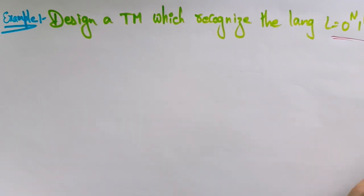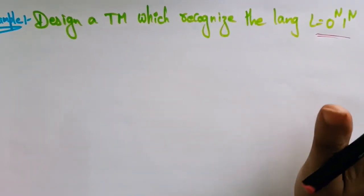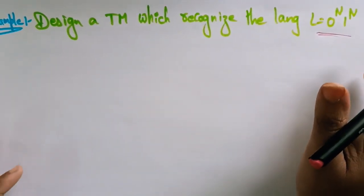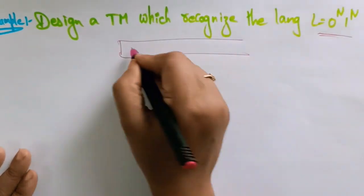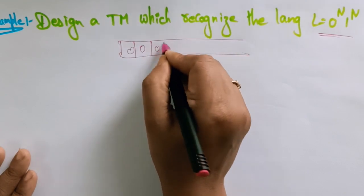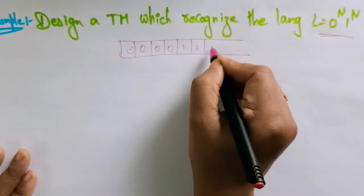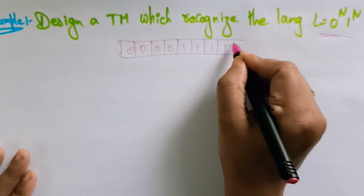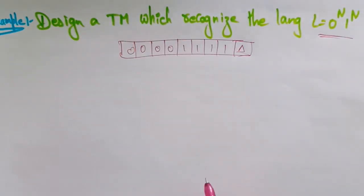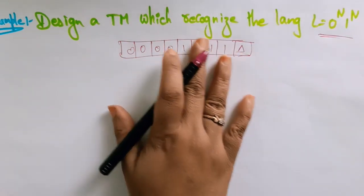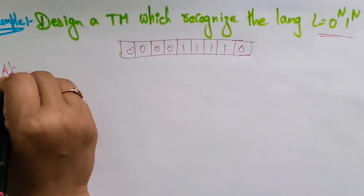This means the same number of 0s and 1s should be there. Suppose if you are taking 4 zeros and 4 ones, then 4 zeros should be there and 4 ones should be there, after that a blank space. All the 0s should be replaced with one variable and 1s should be replaced with another variable. Before designing this, let me write the algorithm.